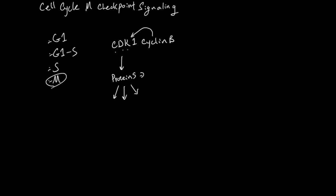And one of these proteins that turn on is APC, anaphase promoting complex. And APC's job is to mark a protein for degradation, and this is called ubiquitination.